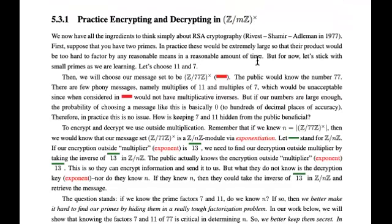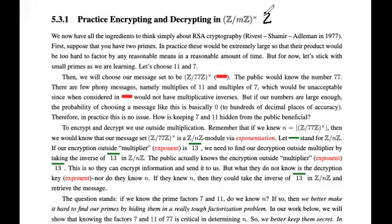So, how are we going to do that? To encrypt a message, we're going to think of this as a Z mod NZ module. It has an outside multiplication by a group Z mod NZ, where N is equal to the size of this multiplicative group.